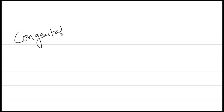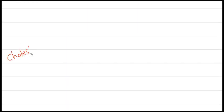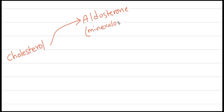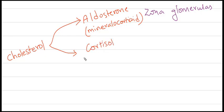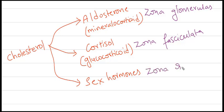Today we are going to discuss congenital adrenal hyperplasia, which is asked in various examinations. To understand this, we need to know some functions of the adrenal gland. From cholesterol, we get aldosterone, which is a mineralocorticoid produced in the zona glomerulosa. We also get cortisol, a glucocorticoid produced in the zona fasciculata, and sex hormones produced in the zona reticularis.